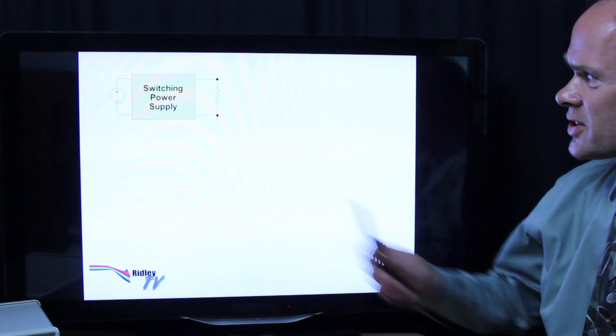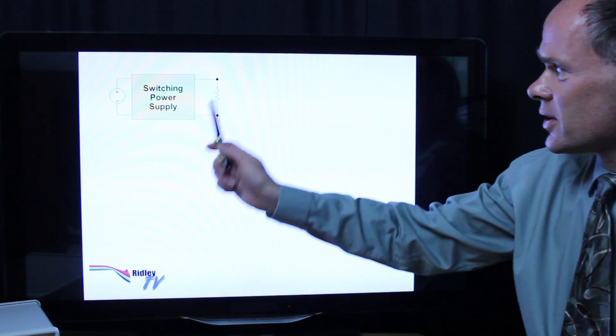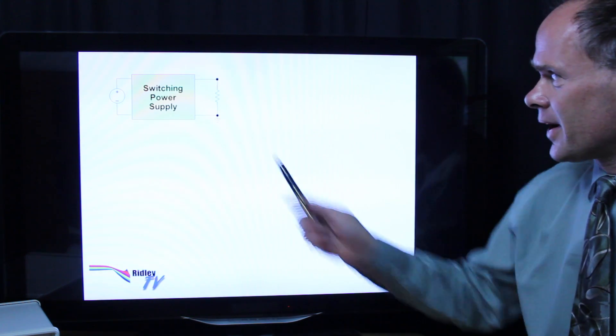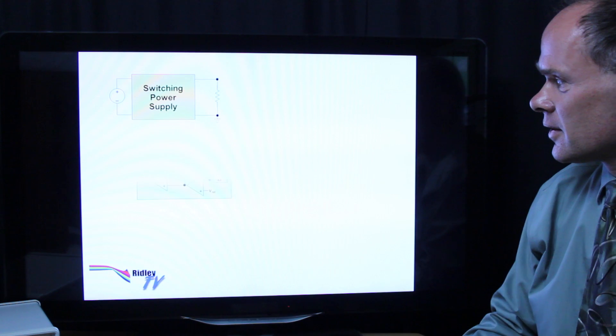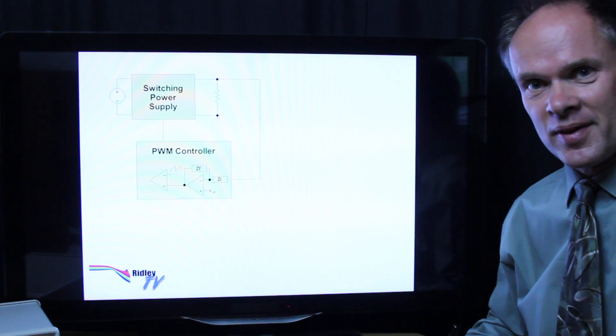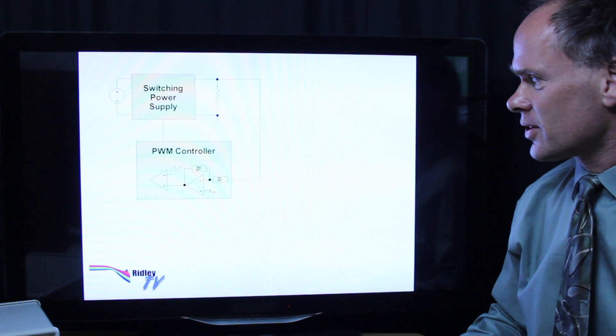Here we have our switching power supply input voltage and load resistance, and what we want to do with this switching power supply is actually close a feedback loop around it. So let's do that, and here is our PWM controller. It doesn't really matter whether this is an analog controller or digital controller.